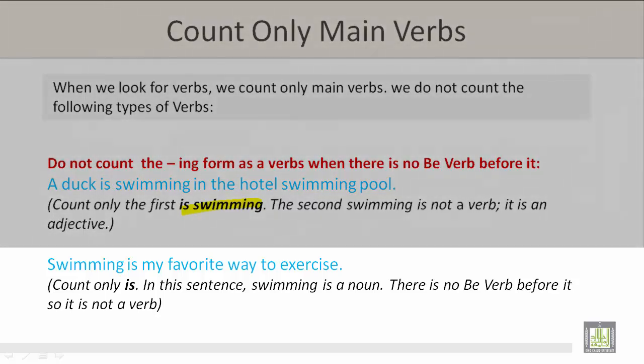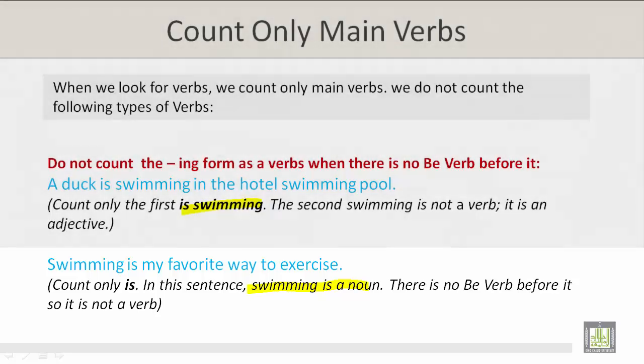'Swimming is my favorite way to exercise.' Count only 'is' in this sentence. 'Swimming' here is a noun — there is no 'be' verb before it, so it is not counted as a verb.